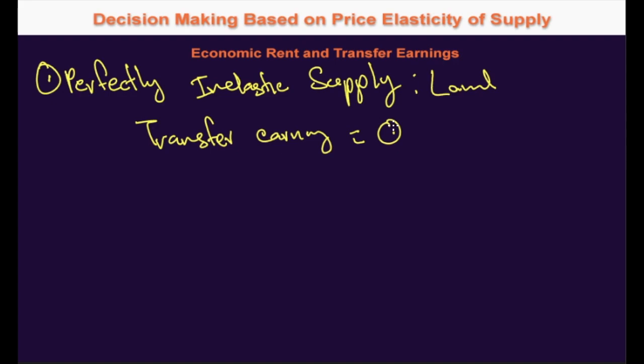Therefore, the whole price or earnings for land is regarded as economic rent. Economic rent is what is being paid for a perfectly inelastic supply, or land. The term 'economic rent,' which in ordinary usage means the price or payment for hiring land, came to be used by economists as the title for the surplus earnings which land receives, since the whole payment made to land is surplus earnings.